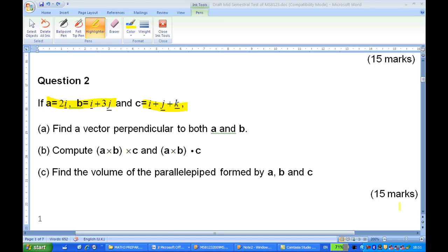In this case, we are given a is equal to 2i, b equal to i plus 3j, c equals i plus j plus k. We are going to compute the triple product a cross b cross c and a cross b dot c.